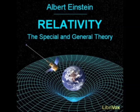Let us consider, for instance, a material point with any kind of motion. If this point had only a momentary existence without duration, then it would be described in space-time by a single system of values, x sub 1, x sub 2, x sub 3, and x sub 4. Thus, its permanent existence must be characterized by an infinitely large number of such systems of values, the coordinate values of which are so close together as to give continuity. Corresponding to the material point, we thus have a unidimensional line in the four-dimensional continuum. In the same way, any such lines in our continuum correspond to many points in motion.